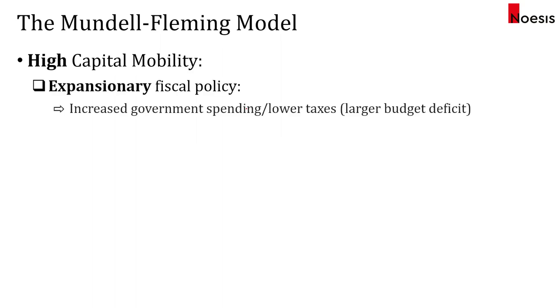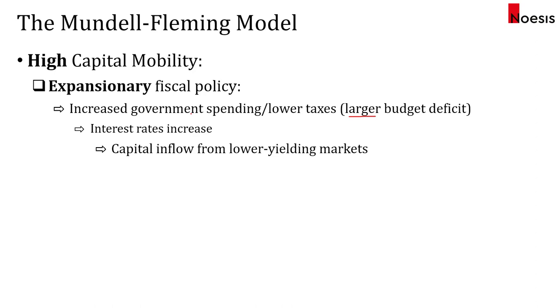We'll first start off by assuming that capital mobility is high, which means that capital is free to flow in and out of the market. Assuming that fiscal policy is expansionary — meaning there is an increase in government spending or lower taxes — the budget deficit will become larger, and this deficit needs to be financed. So the government will need to borrow more money, which would then lead to higher interest rates.